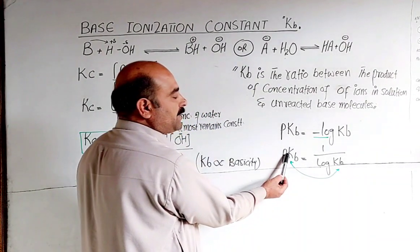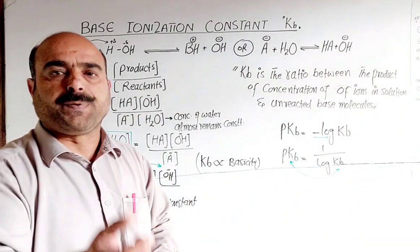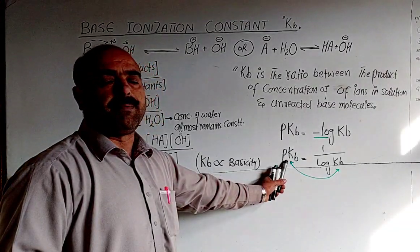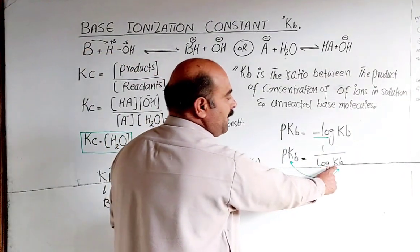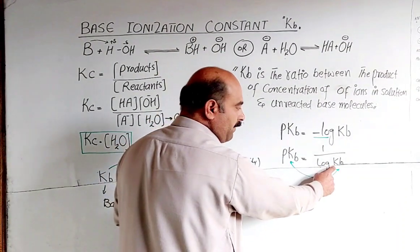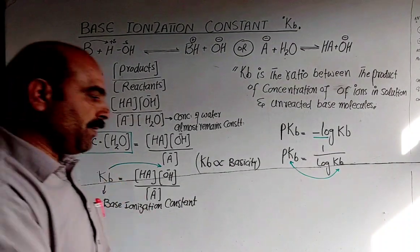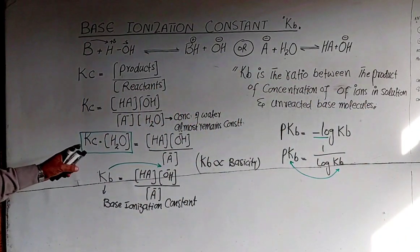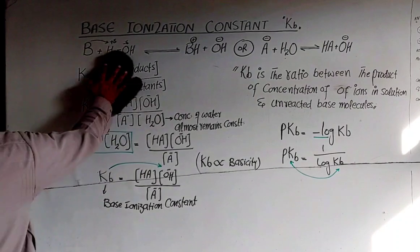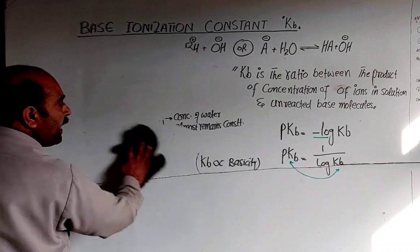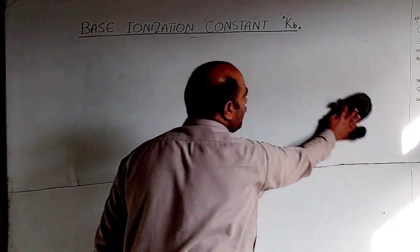Weak bases have higher pKb values. The relationship is: if Kb is larger, the base is stronger and pKb is lower; if Kb is small, the base is weak and pKb is higher. This is the inverse relationship between Kb and pKb. Next, we will discuss the relationship between Ka and Kb in the next video.